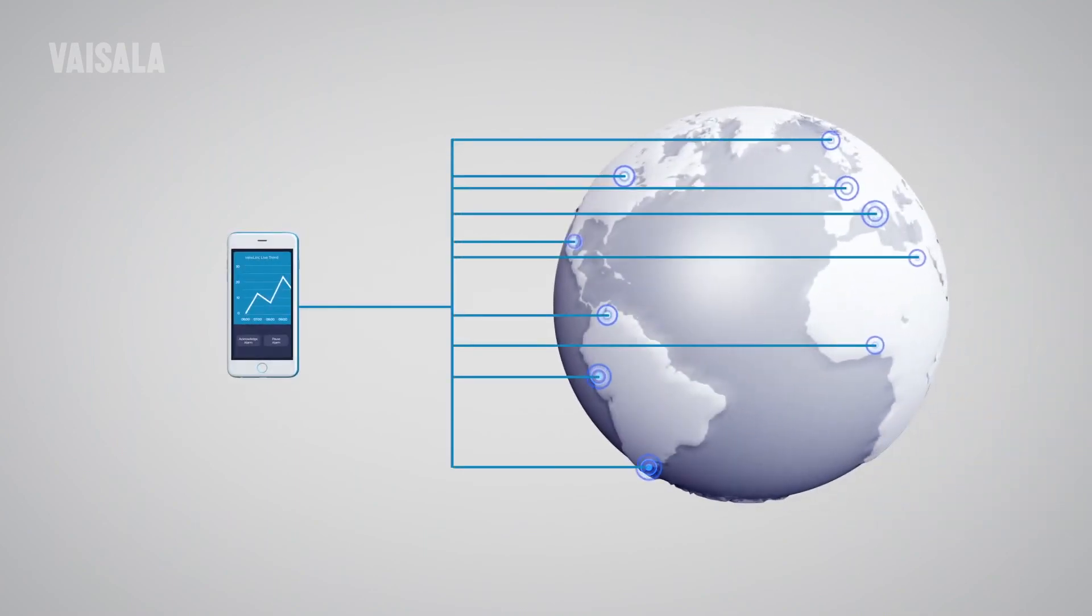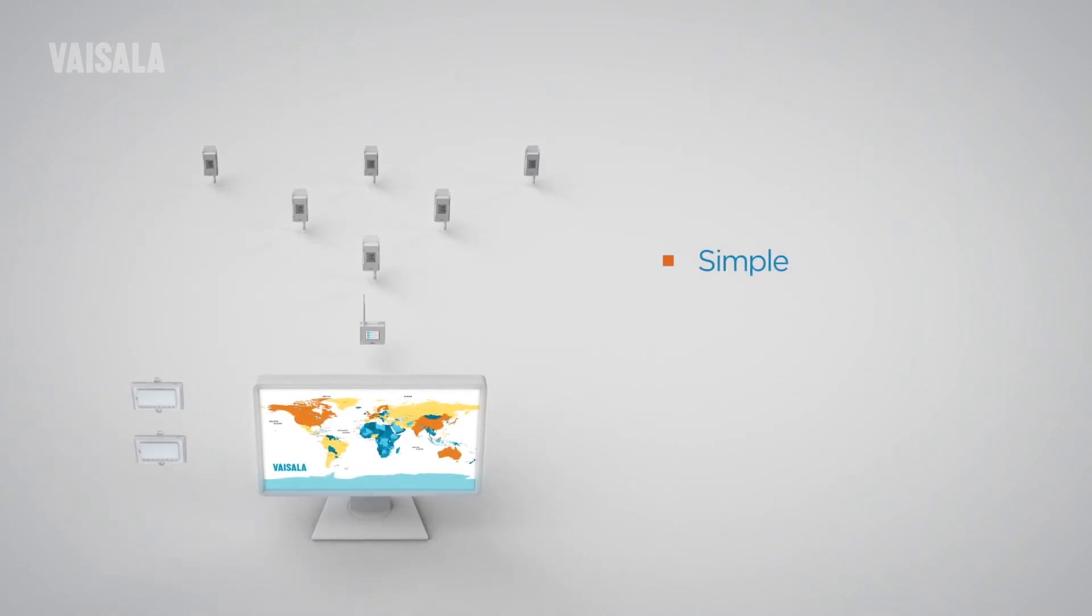With web-based and mobile access, the system can span time zones and scale to thousands of locations. For reliable environmental monitoring that's simple to set up and easy to use, ViewLink with Vinet long-range data loggers delivers data you can trust.